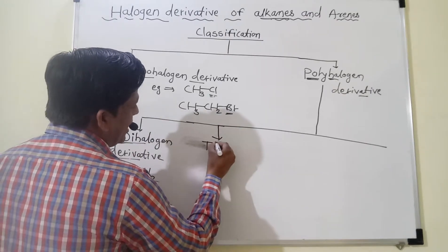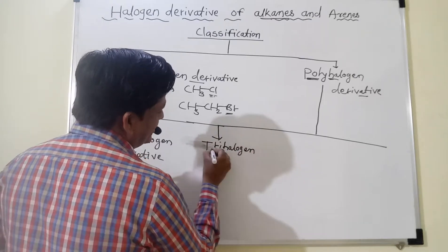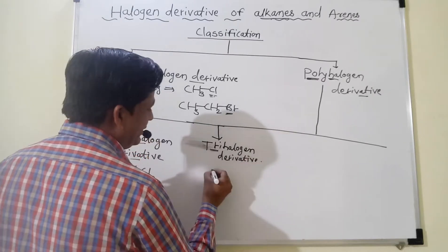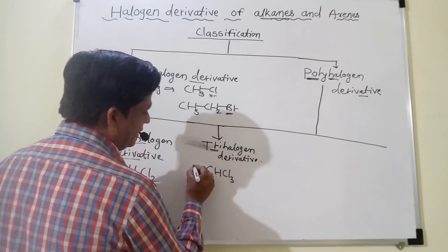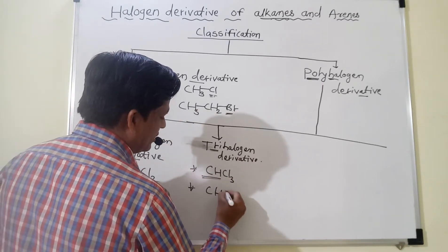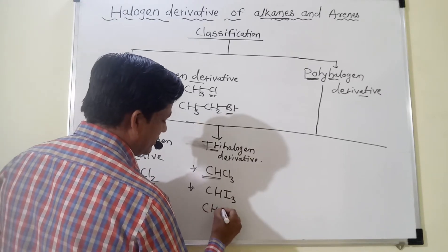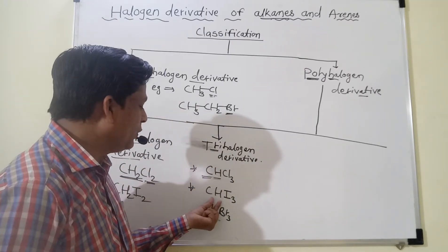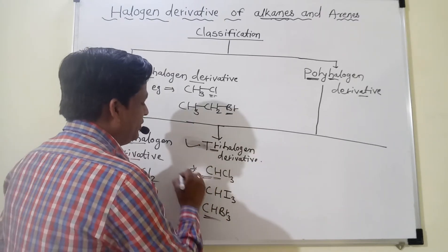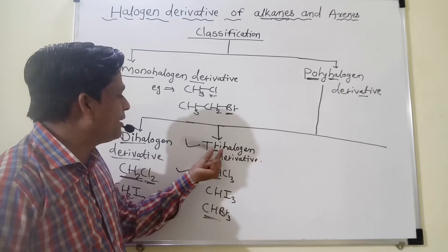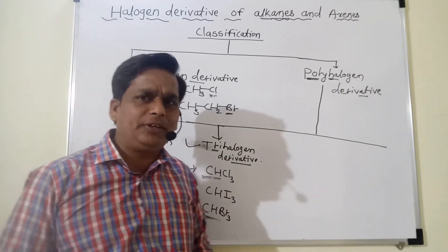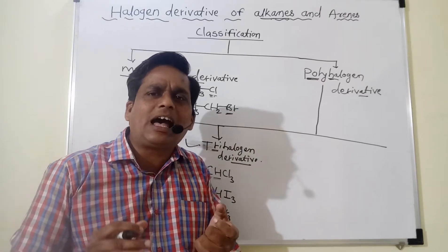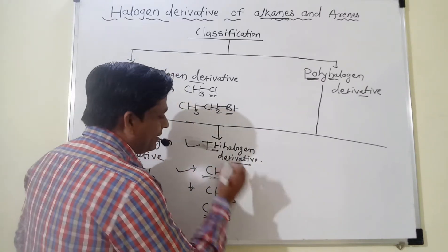The next one is the trihalogen derivative. Tri means three. Examples: CHCl3 (trichloromethane), CHI3 (triiodomethane), CHBr3 (tribromomethane). These are the trihalogen derivatives. Trihalogen derivatives are defined as halogen derivatives in which 3 hydrogen atoms are substituted by 3 halogen groups.